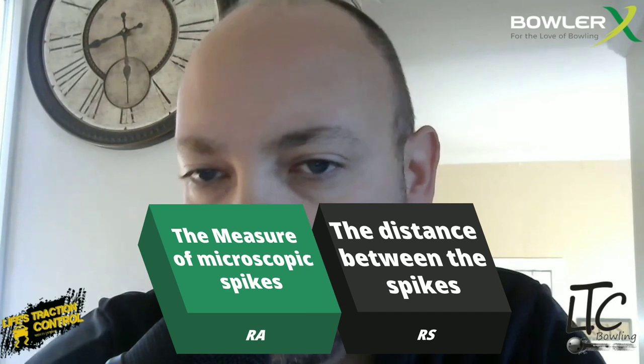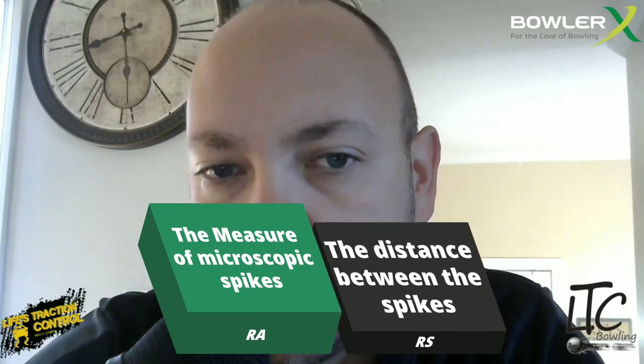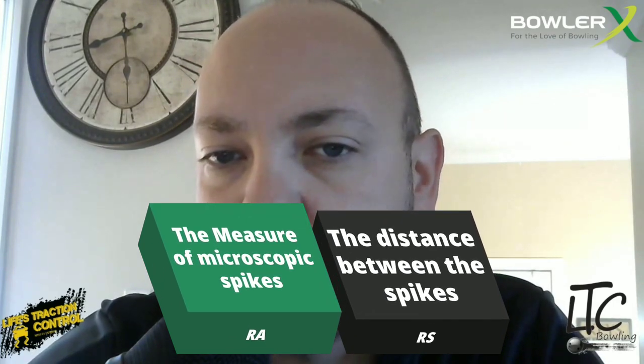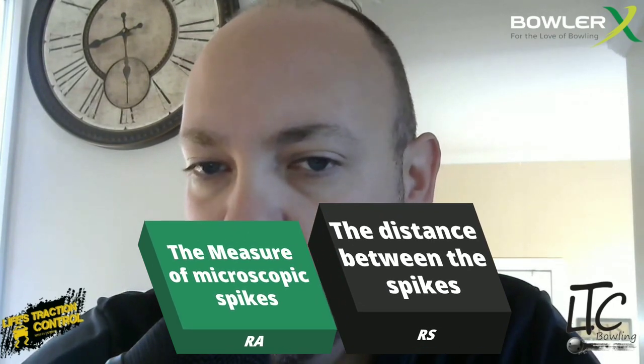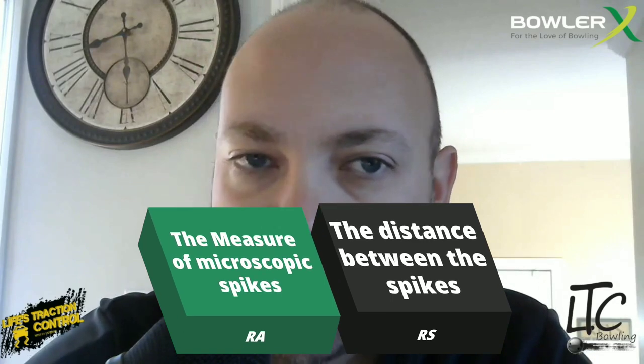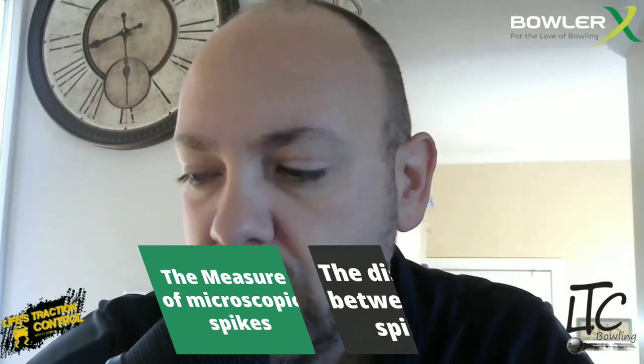Alright, when we're talking about the RS and RA values — the RA is the measure of microscopic spikes on a bowling ball surface, and the RS measures the distance between those spikes. So what we're trying to figure out is what is the optimum depth and distance we want those spikes, or the grit, to be.